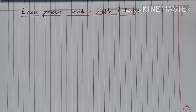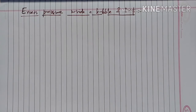Excess pressure inside a bubble and drop. Surface tension we have already discussed. Surface tension is a consequence that liquid drops or bubbles tend to be spherical in shape if we neglect gravity or other effects. This is because in a spherical shape the surface area is minimum and the surface energy is low.